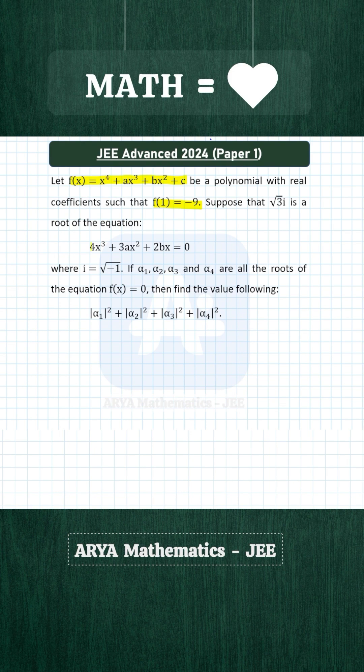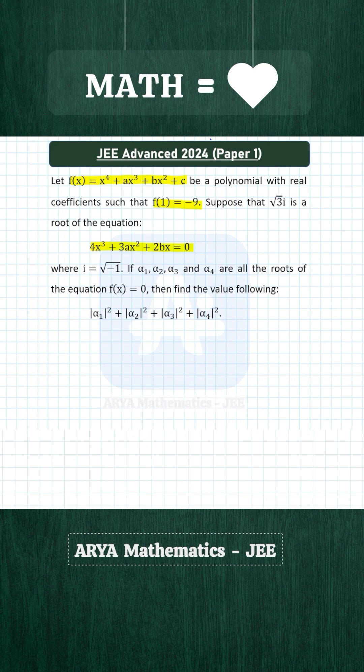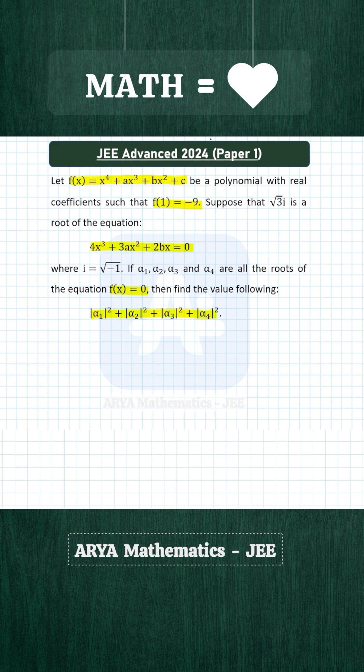If √3i is one of the roots of this cubic equation in x, where i = √(-1), and α₁, α₂, α₃, and α₄ are the roots of f(x) = 0, then we have to find the value of this quantity.